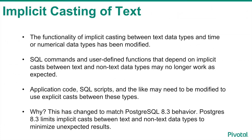The functionality of implicit casting between the text data type and time or numerical data types has been modified. SQL commands and user-defined functions that depend on implicit casts between text and non-text data types may no longer work as expected. Application code, SQL scripts, and the like may need to be modified to use explicit casts between these types. This functionality has been modified to match Postgres 8.3 behavior. Postgres 8.3 and above limits implicit casts between text and non-text data types to minimize unexpected results.